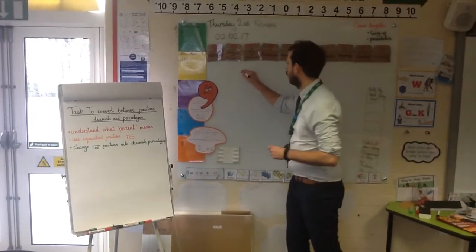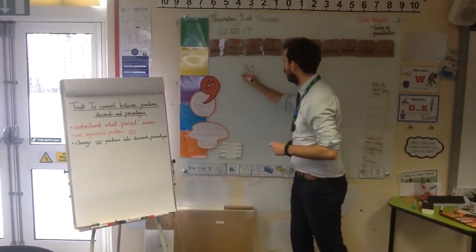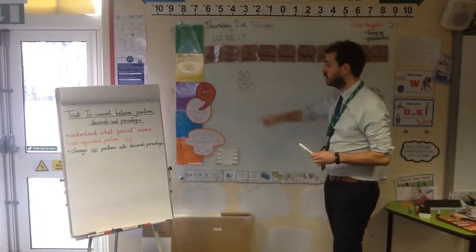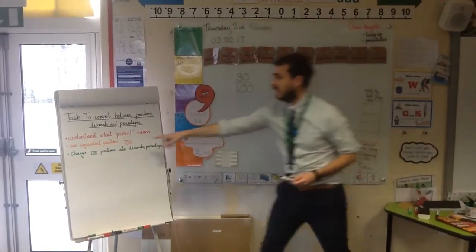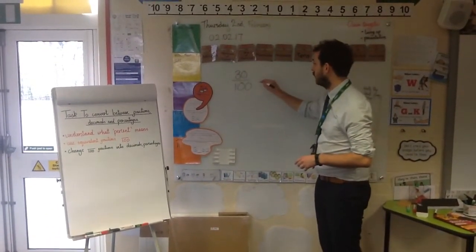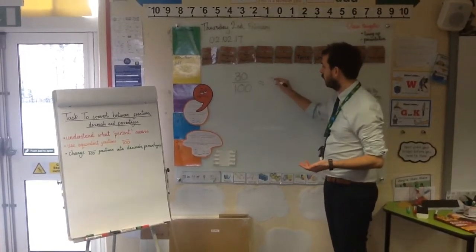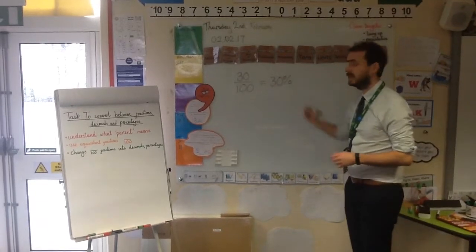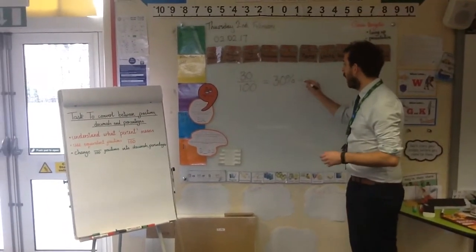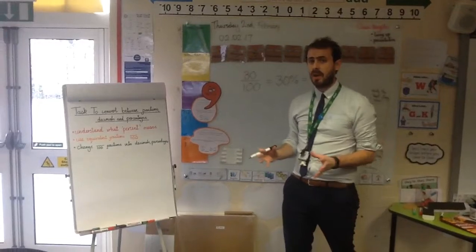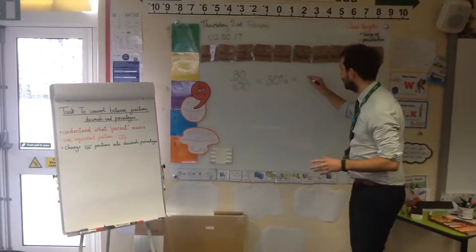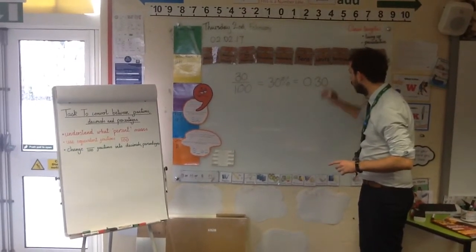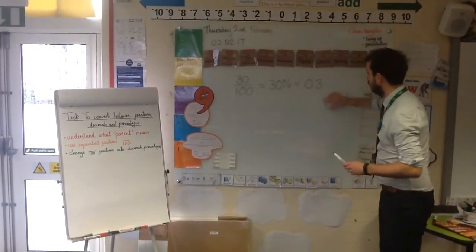If I give you a straightforward example — if I had a fraction that looked like 30 one-hundredths, you can already tell me that my fraction has a denominator of 100. I don't need to do anything to it, and if percent literally means out of 100, well, how many have I got out of 100? I've got 30. So 30 over 100 is the same as 30%. As a decimal, it's going to be 0.30, or we could just say 0.3.